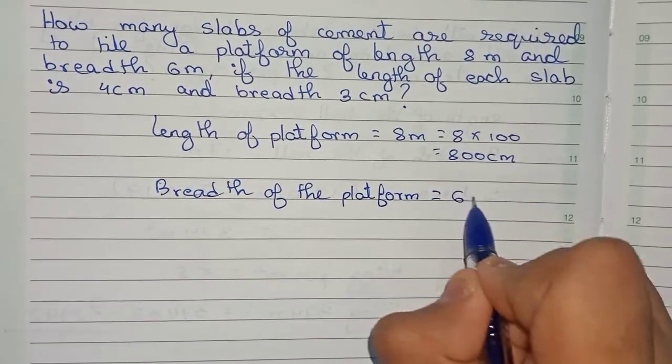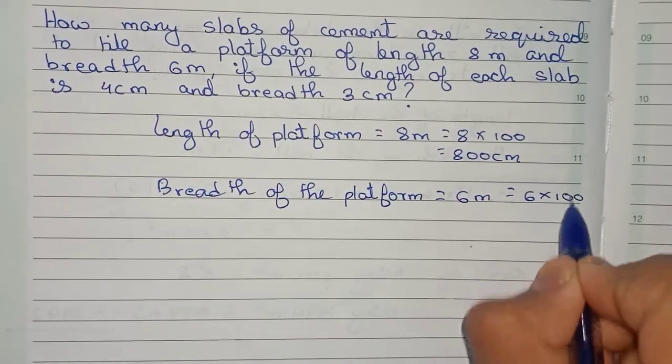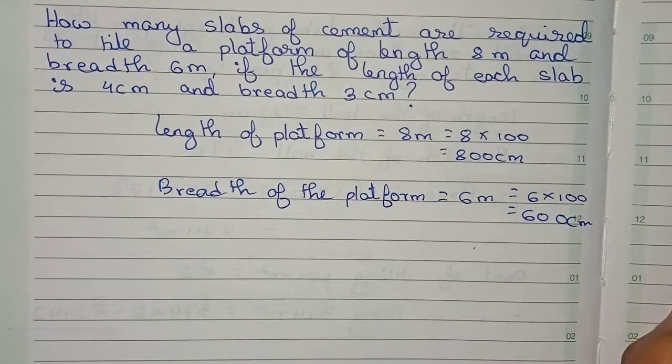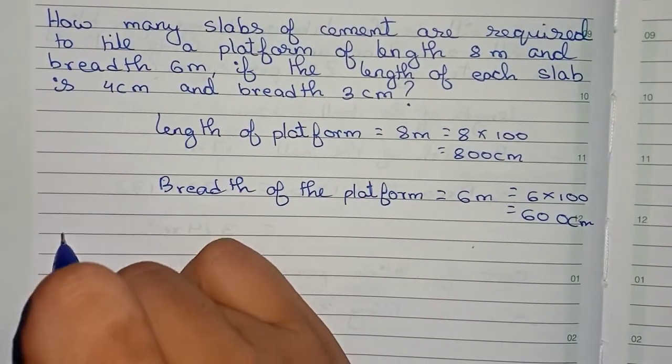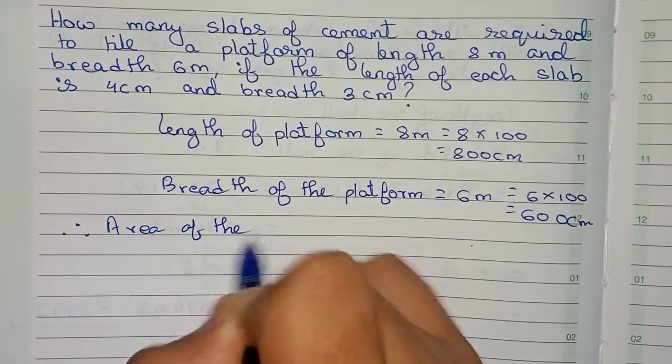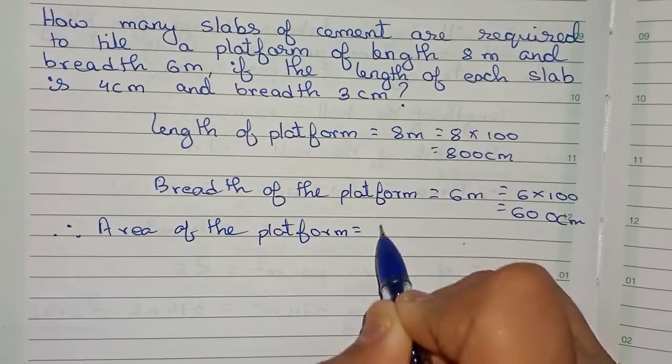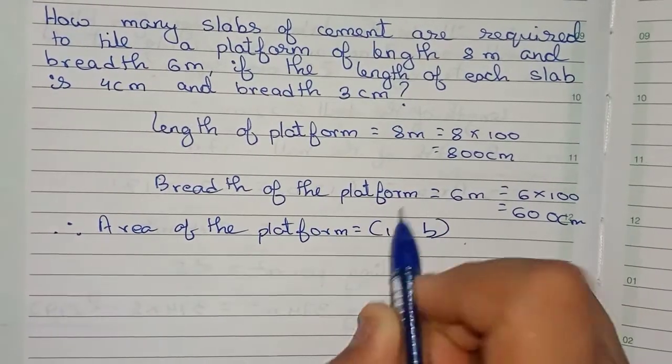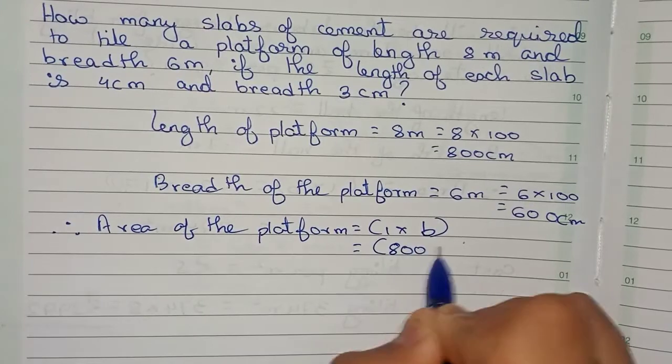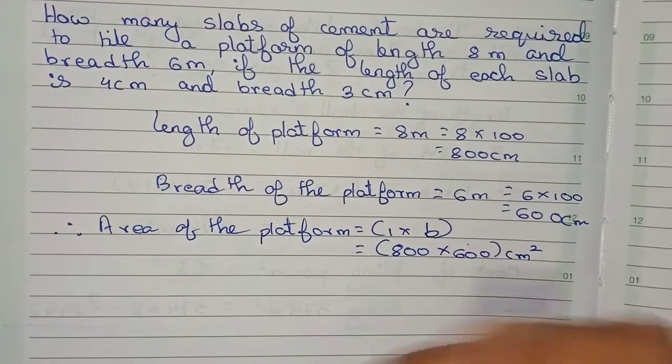Now the breadth of the platform is equal to 6 meters. Convert it into centimeters: 6 × 100 = 600 centimeters. Now I'll find the area. Therefore, area of the platform equals 800 × 600 cm².